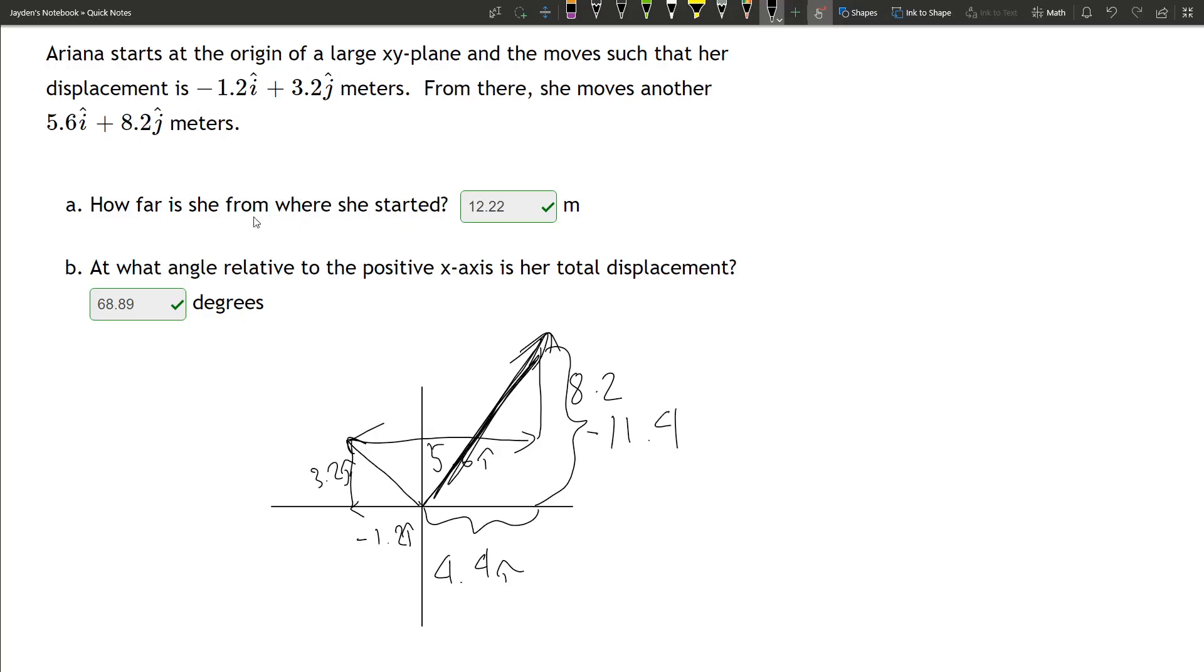It's asking how far is she from where she started. These are two values, but we're looking for the hypotenuse. That is a right triangle. So we just do 11.4 squared plus 4.4 squared and square root that using the Pythagorean theorem.